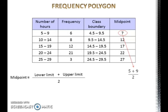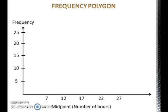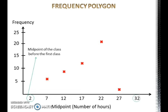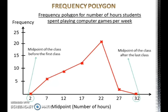After the midpoints are found, plot the midpoints on the horizontal axis and the frequency on the vertical axis. Then plot a dot for each midpoint at the height corresponding to its frequency. Also, add one midpoint for the class before the first class and one midpoint for the class after the last class, and plot a dot at frequency 0 for both midpoints. Connect the dots with straight lines. Lastly, write the title of the frequency polygon.